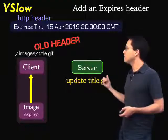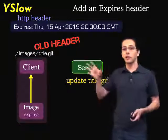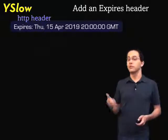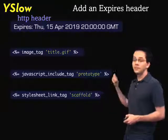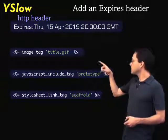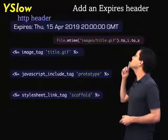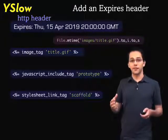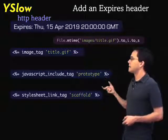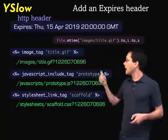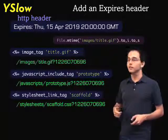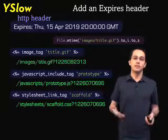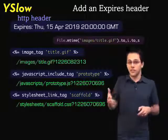Rails, by default, has a way of getting around this issue if you're using any of these helper methods. What Rails does is it looks for these files in the file system and calls mtime on each of them — basically checking when they were last modified — then takes that timestamp and appends it to the end of the URL. So when we update the image, the timestamp changes, and the next time somebody loads that page, it won't pull from the local cache because the URL is different.